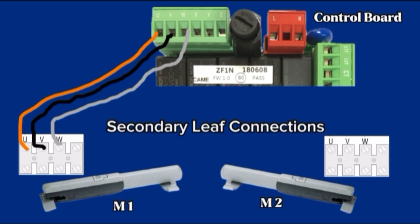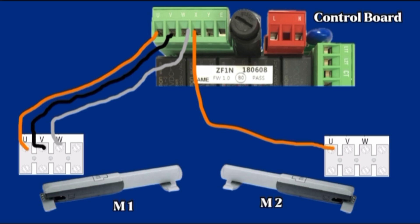Motor 2 secondary leaf connections. Terminal X connect to U of motor 2. Terminal Y connect to V of motor 2. Terminal W connect to W of motor 2.